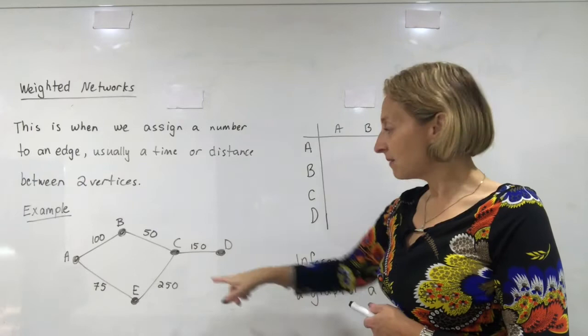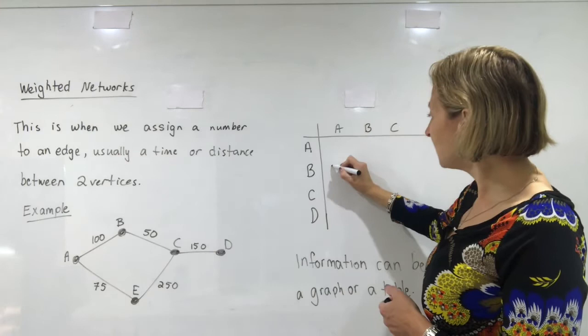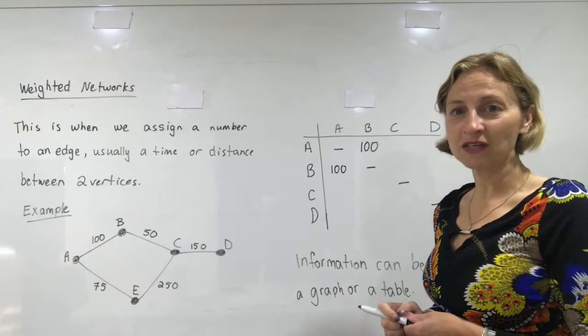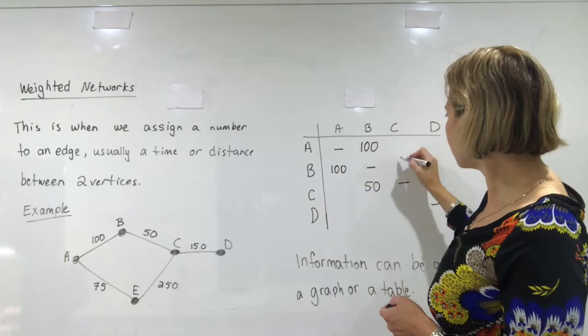To get from point A to point B let's say it's 100 kilometres so to get from A to B it's 100 or to get from B to A is 100. Of course you can't get from A to A, B to B, C to C and D to D they would just be zero kilometres really, they're nothing. Then to get from B to C is 50, B to C is 50. C to D is 150.